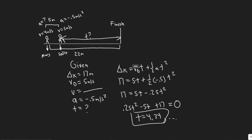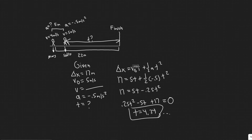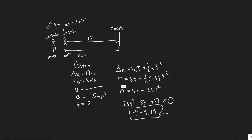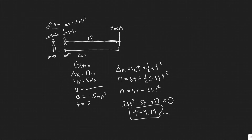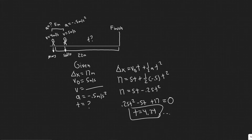There are two values because with constant deceleration Sally would eventually slow to zero and then start going backward, reaching the same displacement a second time. The second time value corresponds to that scenario. Since we want the time she first reaches the finish line traveling forward, we only use the first value, t equals 4.34 seconds.